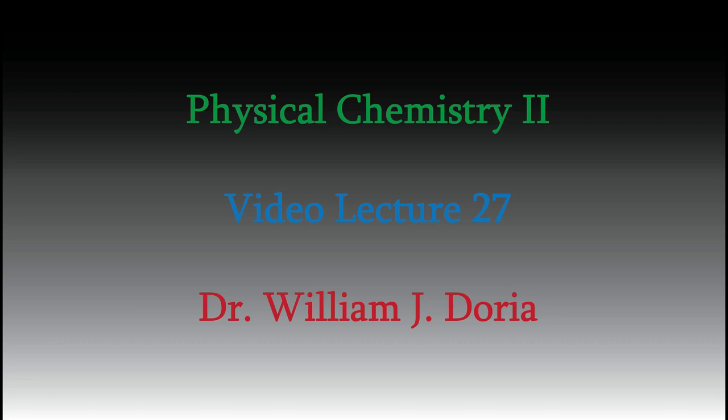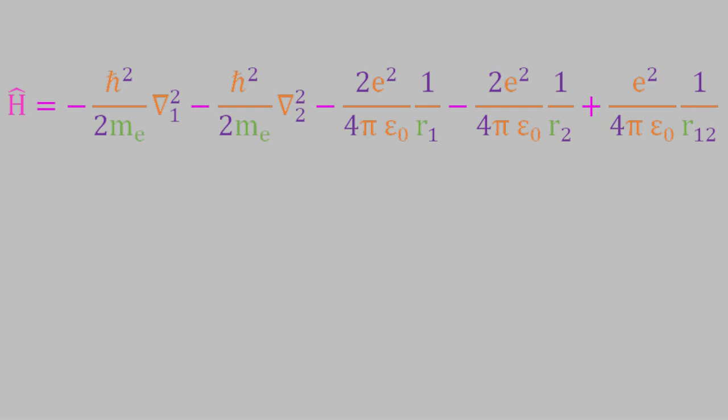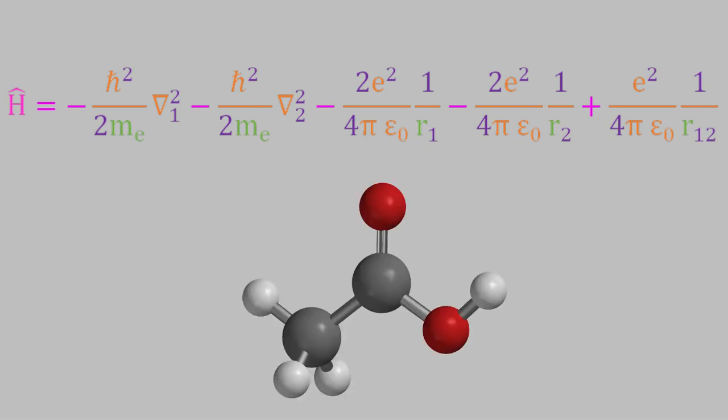Hi, and welcome back to my series of videos for Physical Chemistry 2. In the past videos, we've looked at orbitals and wave functions for single atoms. Now that we've looked carefully at the Hamiltonians for such systems, we're ready to move on to more complicated systems: molecules and molecular ions. We'll see that if we remember what we learned in previous videos, it's not too hard to determine the Hamiltonians of larger systems.